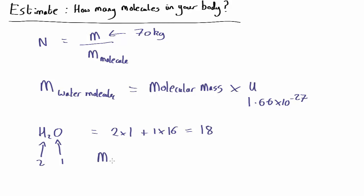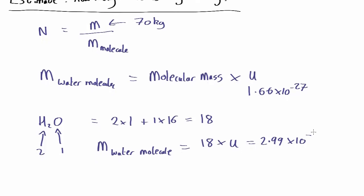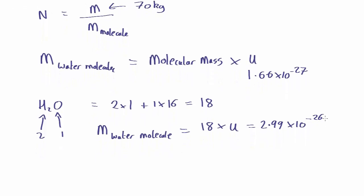So the mass of a water molecule is going to be 18 times U which comes out as 2.99 times 10 to the minus 26 kilograms.